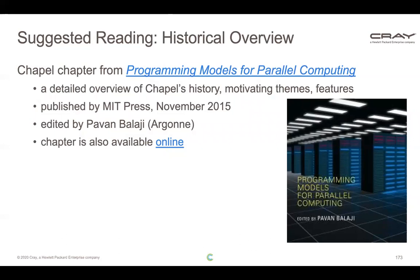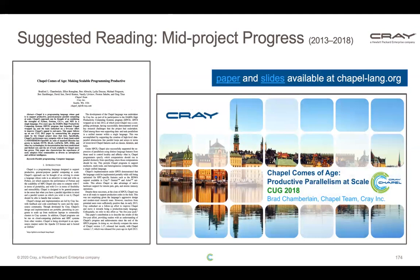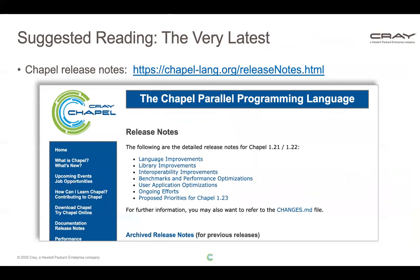For suggested reading: there's a chapter on Chapel in the book 'Programming Models for Parallel Computing,' available to read free online. A paper written a couple of years ago covers progress in the five years following that book chapter, presented at the Cray Users Group in 2018. For the latest on implementation and releases, we maintain release notes on our project page — currently for Chapel 1.21 and 1.22 — covering language, library, interoperability, benchmarks, performance improvements, and plans for the next release.